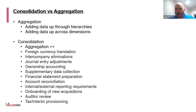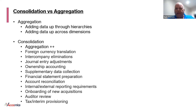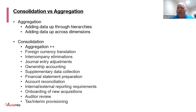If you think about accounts, time periods, entities, and currency — being able to see a report or grid showing total net income for all entities in a particular currency — that would be your aggregate view. But it isn't necessarily a consolidated view. When we talk about consolidation, it's really aggregation significantly enhanced. To consolidate, you need to be able to do things like foreign currency translation, intercompany eliminations, and journal entry adjustments.